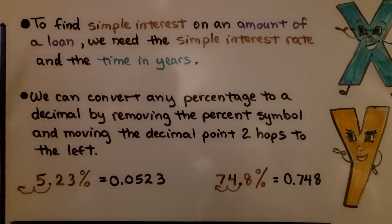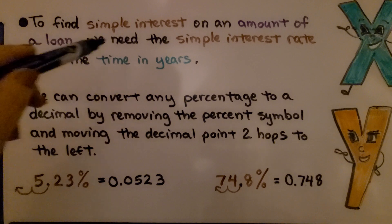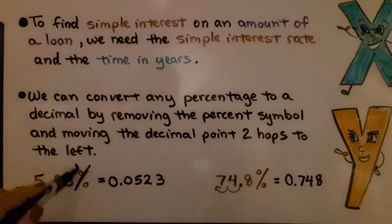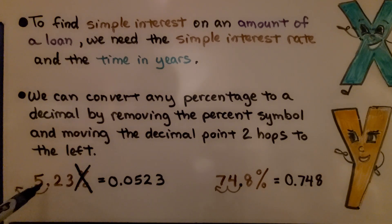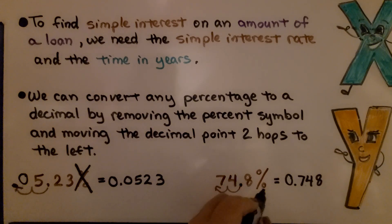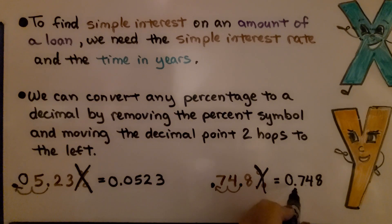To find simple interest, we need the simple interest rate and the time in years. We convert any percentage to a decimal by removing the percent sign and moving the decimal point two hops to the left. For example, 5.23% becomes 0.0523, and 74.8% becomes 0.748. Then multiply the decimal rate by the principal to get the interest.